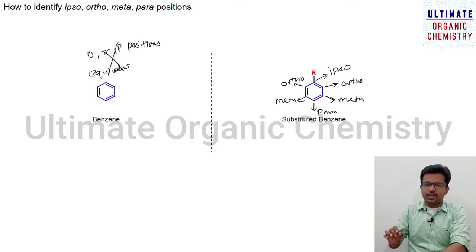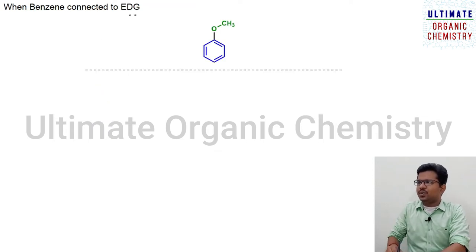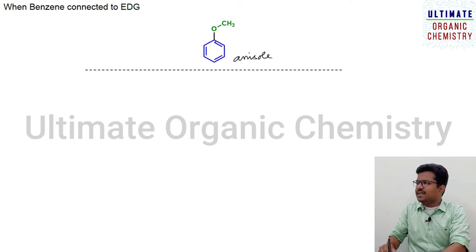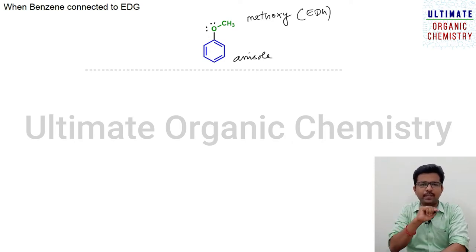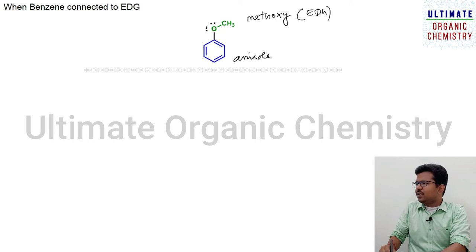When benzene is connected to an electron donating group — for example, anisole, where benzene is connected to a methoxy group, which is an electron donating group — you may ask how we know this is an electron donating group. When oxygen is directly connected to a benzene ring or a double bond system, oxygen has two lone pairs of electrons, so it will easily donate its lone pair to the benzene ring, and it is considered to be an electron donating group.